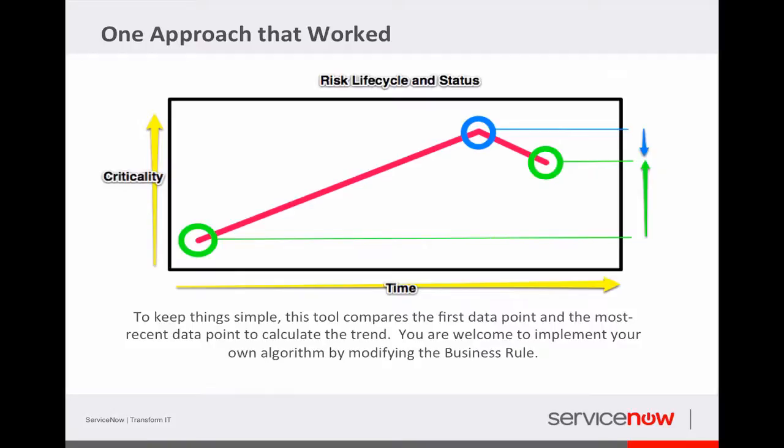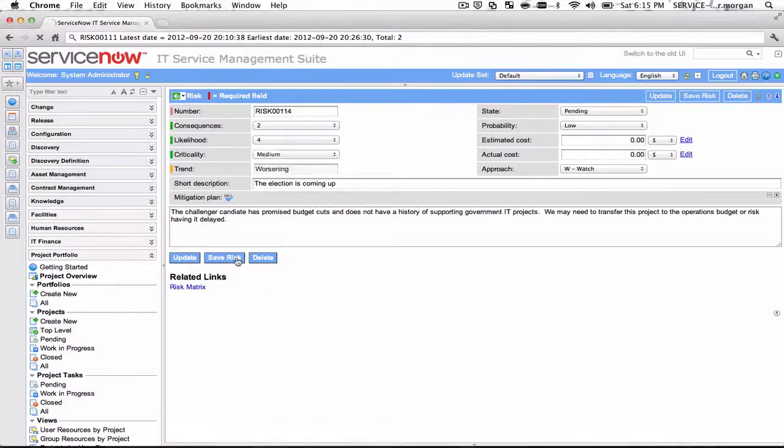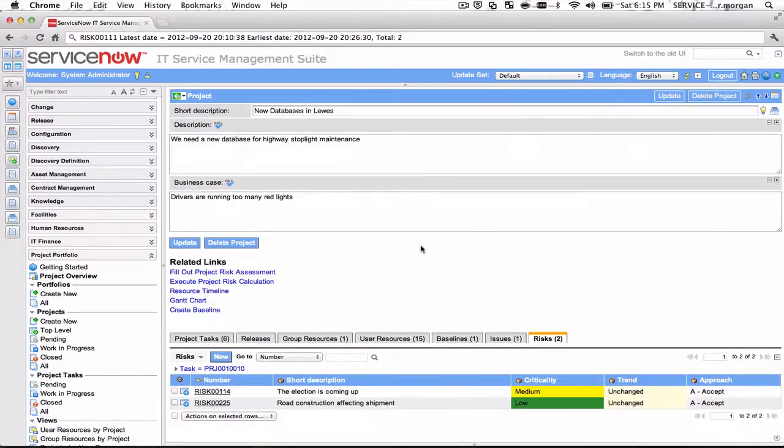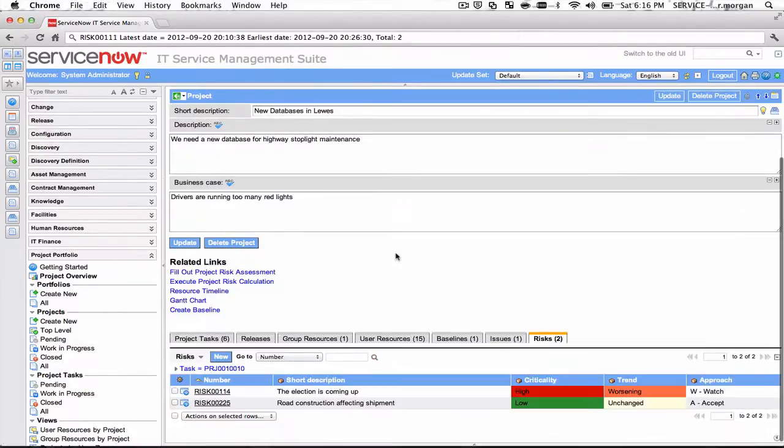Let's go back over to the instance here and kind of track these in real time. So it was risk 14 and I came in here and based on changing that, it didn't change the criticality—it's saying that the trend is unchanged automatically. Now this has filled in the appropriate approach, so project managers like to match the trend they're expecting with the approach and how they're going to respond to that. Let's play around here a little bit. Let's try to make it worse.